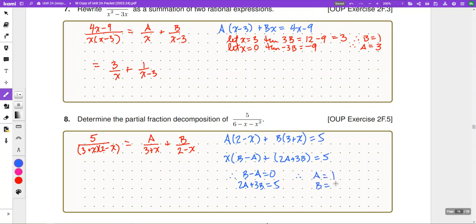So, we can solve that system and be able to say, a must be equal to 1. b must also be equal to 1. So, the partial fraction decomposition will be 1 over 3 plus x plus 1 over 2 minus x.